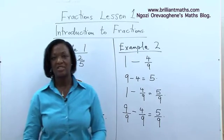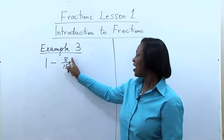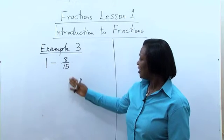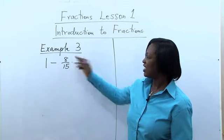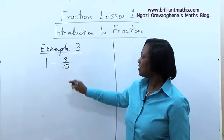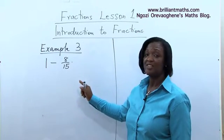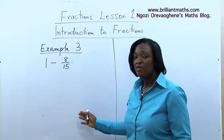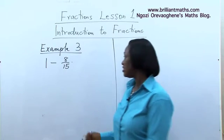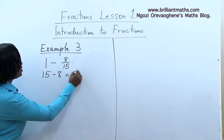Can we try this next one together? Example three is one take away eight over fifteen. By now you should know what to do. Fifteen parts and eight are taken. What is left? We subtract eight from fifteen and that leaves us with seven. So the fraction left is seven over fifteen. From now on you can actually do this mentally without any much calculations. So we are saying that fifteen take away eight is equal to seven.